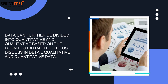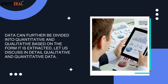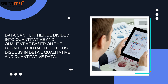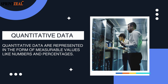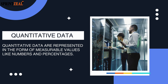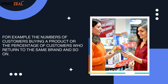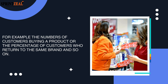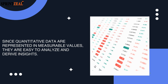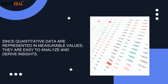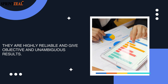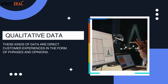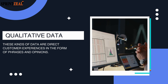Data can further be divided into quantitative and qualitative based on the form it is extracted. Quantitative data are represented in measurable numerical values — for example, the number of customers buying a product or the percentage of customers who return to the same brand. Since quantitative data are represented in measurable values, they are easy to analyze and derive insights from. They are highly reliable and give objective and unambiguous results.